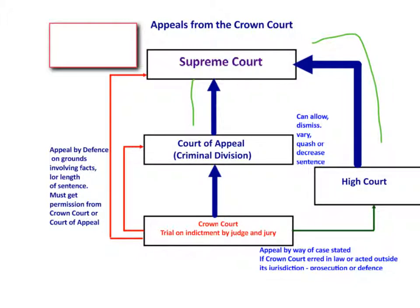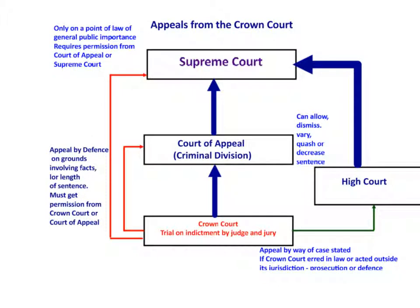It is even possible to appeal all the way from the Crown Court directly to the Supreme Court. However, such an appeal can only be made on a point of law of general public importance, and also requires permission from either the Supreme Court or the lower court, whether that be the Crown Court, the Court of Appeal, or the High Court. So those are the options for appealing from the Crown Court.